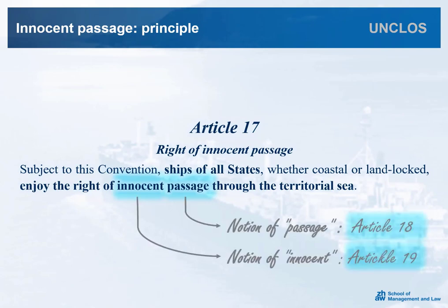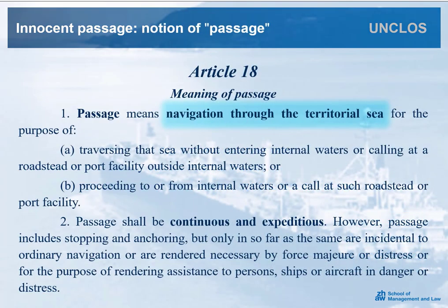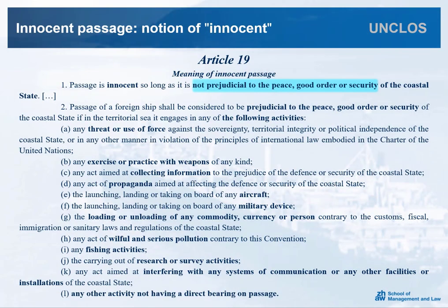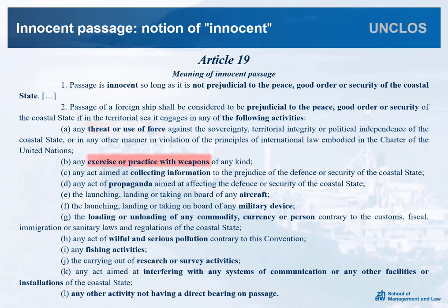Those two notions are defined in Articles 18 and 19. According to Article 18, passage means navigation through the territorial sea in order to traverse it or reach a port. Such passage shall be continuous and expeditious, without stopping or anchoring, with some exceptions narrowly defined. But above all, the passage must be innocent — that is to say, it must not be prejudicial to the peace, good order, or security of the coastal state. This is specified in paragraph 2 of Article 19, which lists a number of specific activities incompatible with innocent passage. Top of the list is of course the threat or use of force against the sovereignty, territorial integrity, or political independence of the coastal state. In the same logic, no exercise or practice with weapons is permitted.